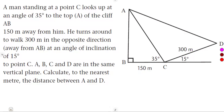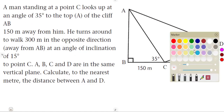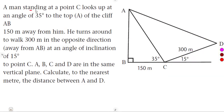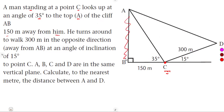There is a question where a man is standing at point C. He looks up at an angle of 35 degrees to the top, which is point A — the top of the cliff AB. The cliff AB is 150 meters away from the man.